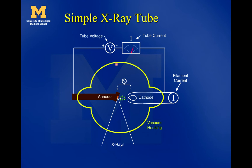All x-ray tubes function in a vacuum. We have this vacuum housing around the x-ray tube. They suck all of the air out so that when the electrons are traveling from the cathode to the anode, they can do so without running into any air molecules or losing any energy. Most things produce an electron beam using a hot cathode. In the x-ray tube, it's usually a spiral of tungsten — it looks almost like an incandescent light bulb.